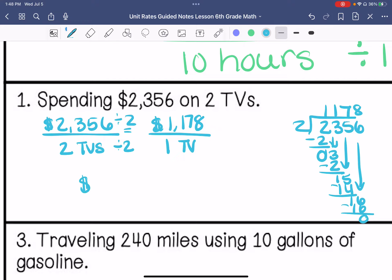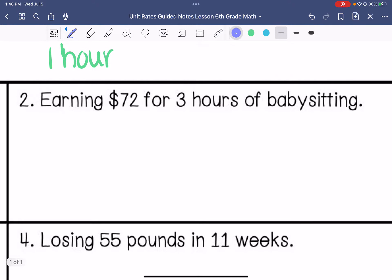So $1,178 per TV. Alright, if you earn $72 for three hours of babysitting, how much are you getting paid per hour? So you're getting paid $24 per hour.